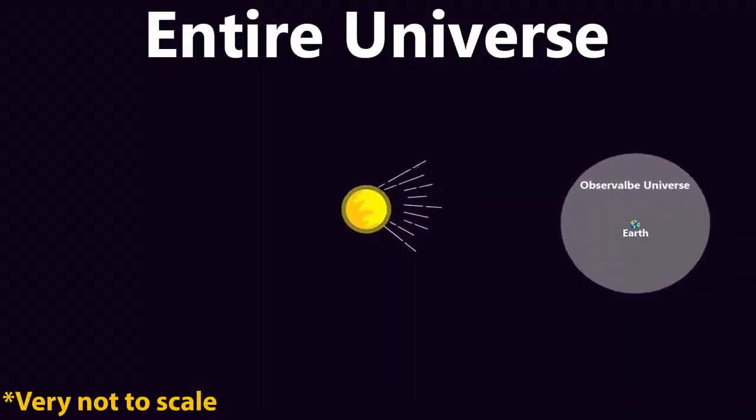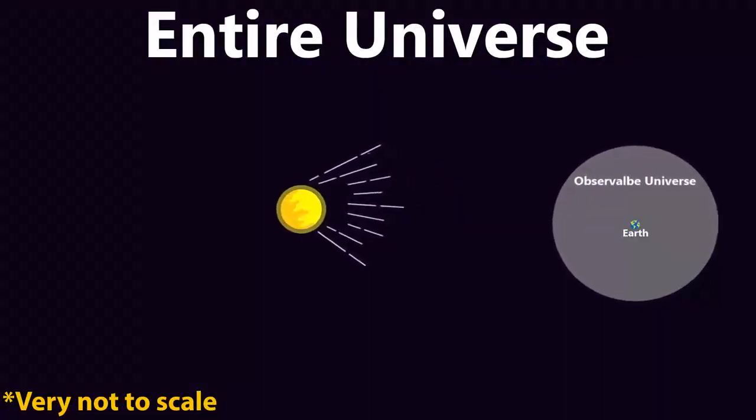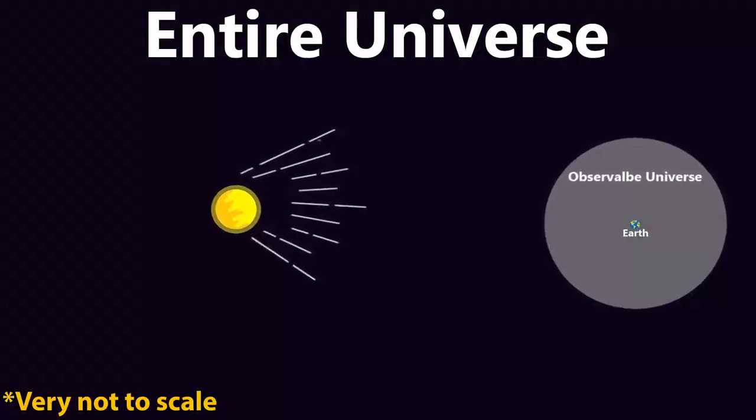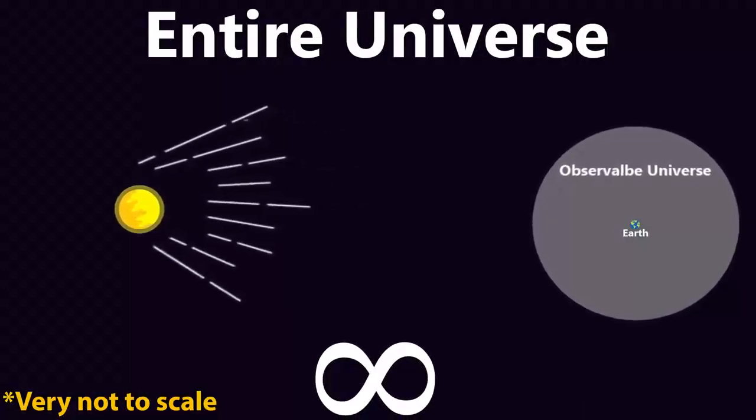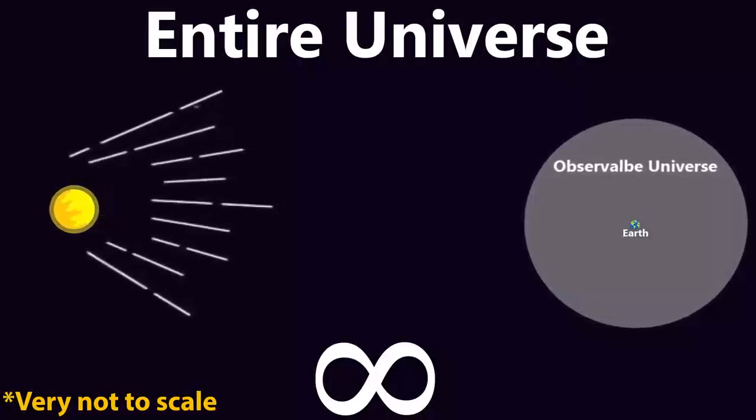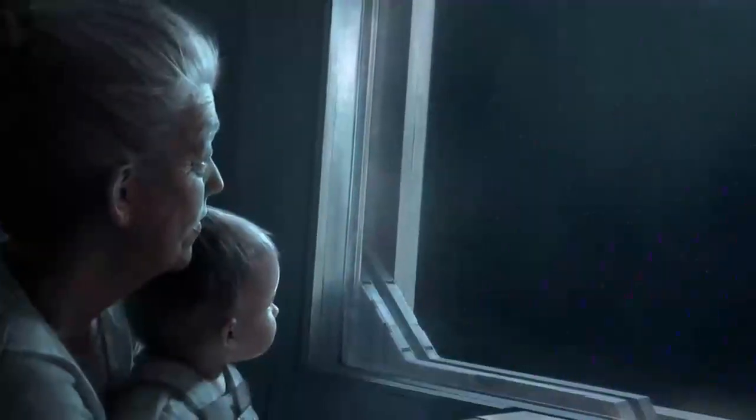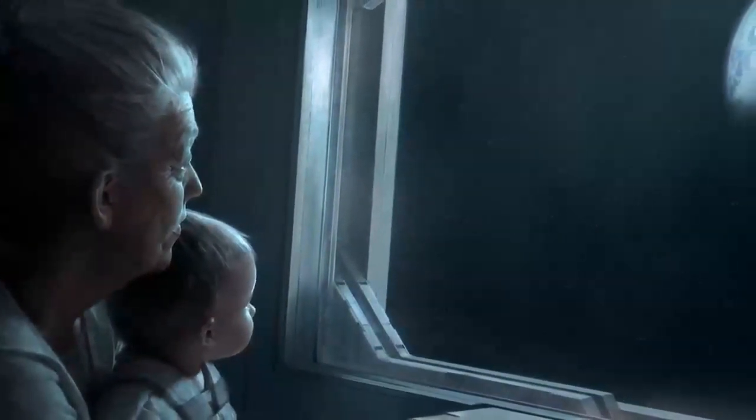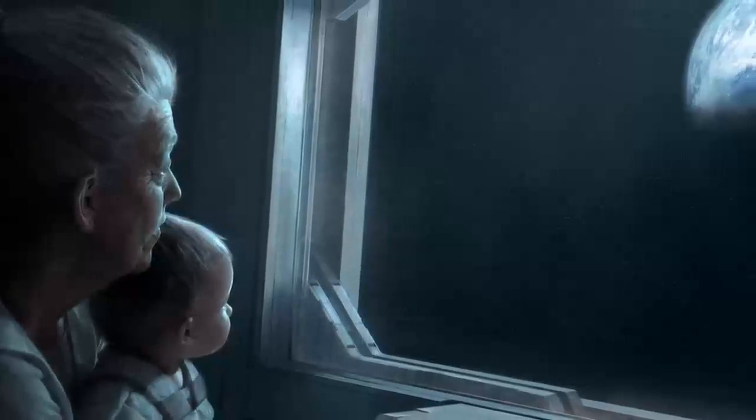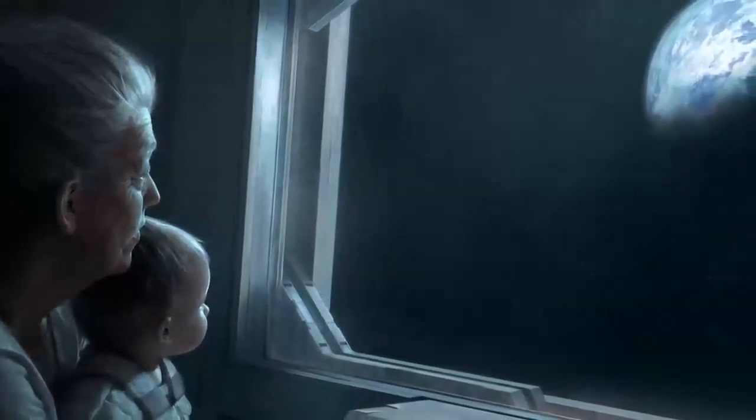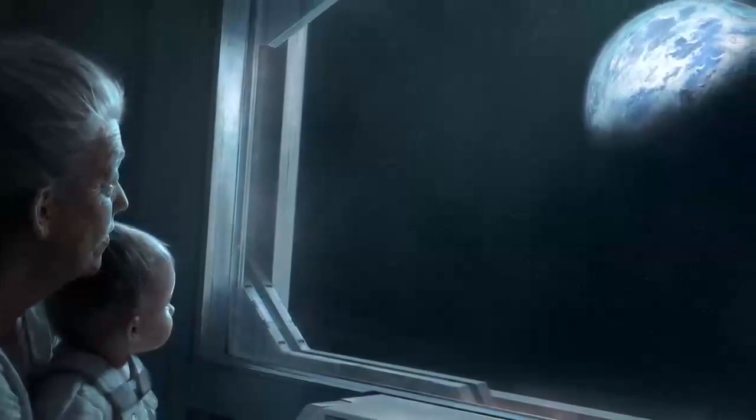Because some parts of space very far away from Earth are expanding away from us faster than the speed of light, that means that the light from these places will never in an infinite amount of time reach Earth. Meaning that even if humanity is eternal and exists forever, there will still be an unknown number of places in the universe that we will never know about or ever see.